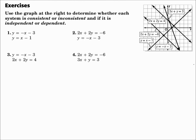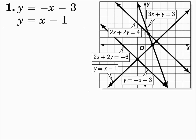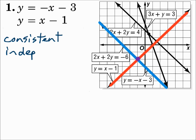Use the graph to determine whether each system is consistent or inconsistent, and if it's independent or dependent. Number one: y equals negative x minus 3, and y equals x minus 1. Those lines intersect at one point, and when lines intersect at one point, the system is called consistent independent.